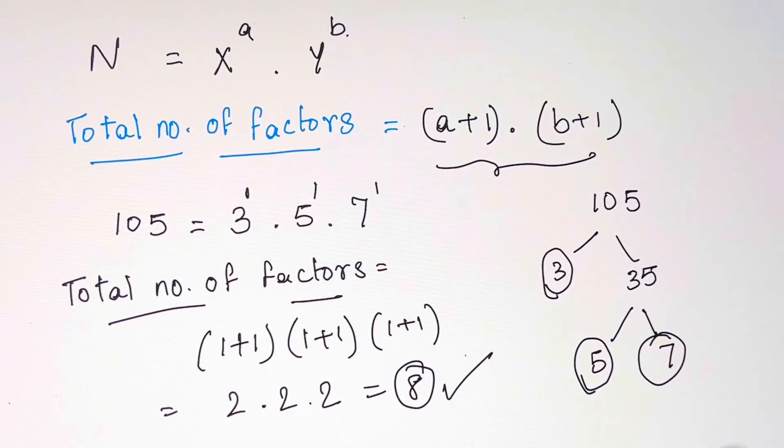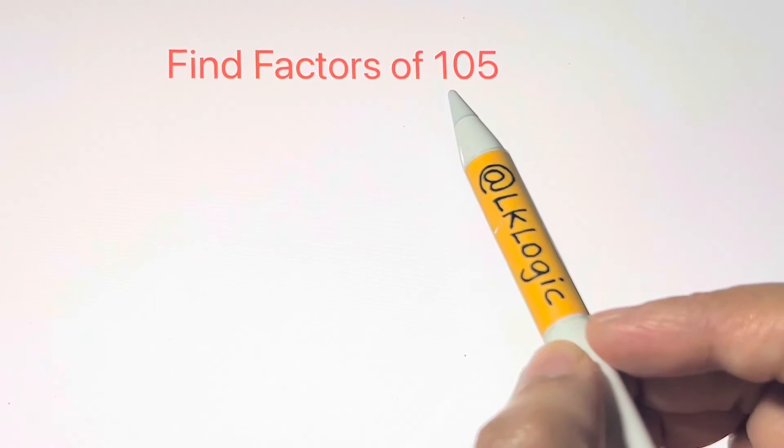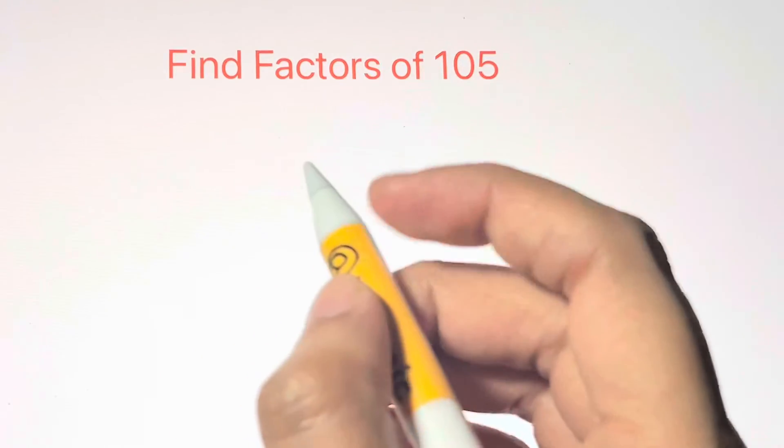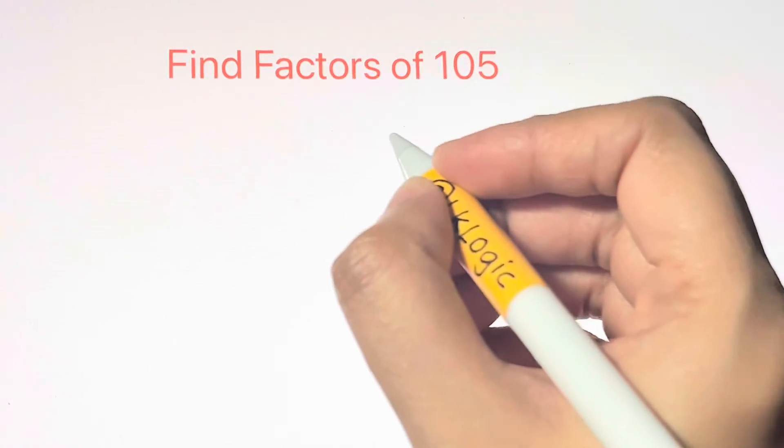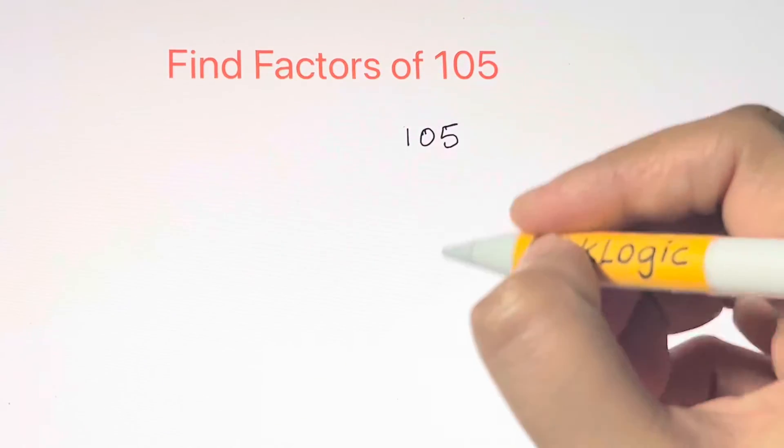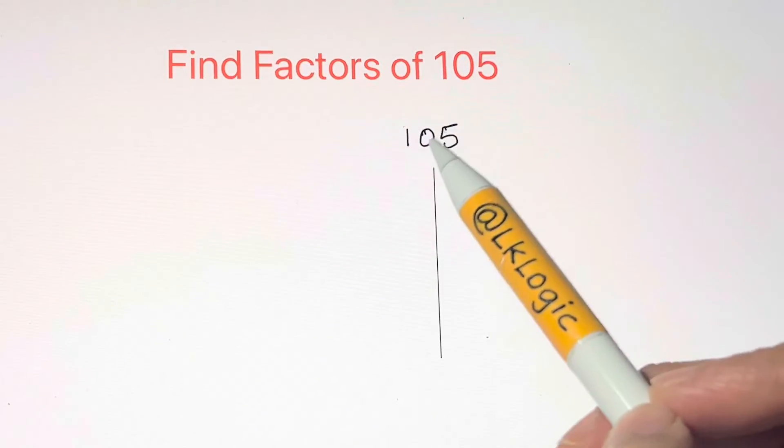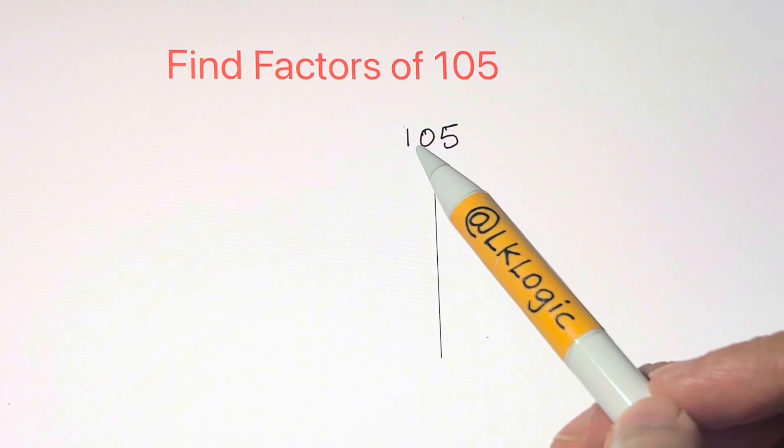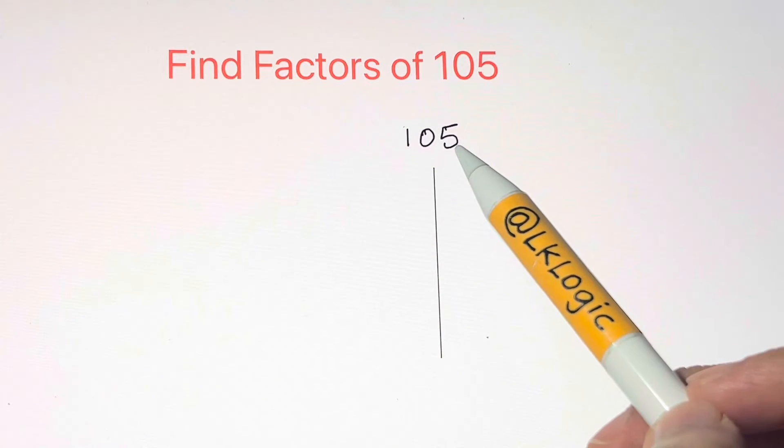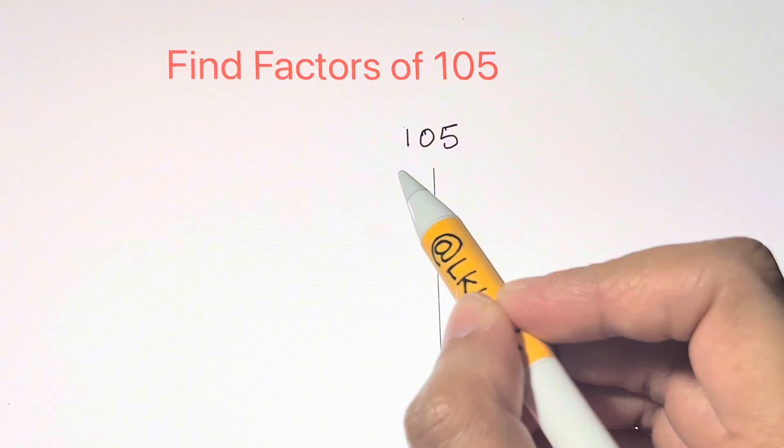That's right. And how to find all the 8 factors? Let us find the factors of 105 using multiplication method. I'll just write the number here: 105, and then just draw a straight line. In order to find the factors of 105 using multiplication, we need to check what pairs of numbers multiply to give 105. So we need to divide 105 by natural numbers starting from 1.